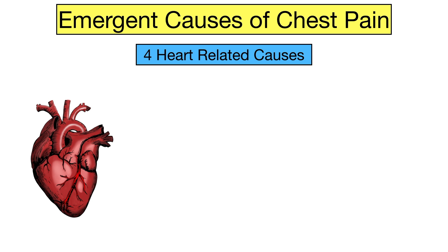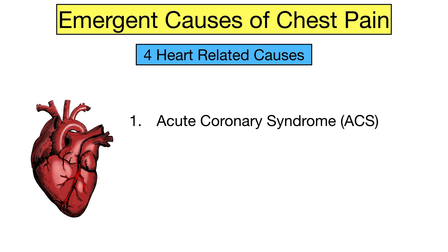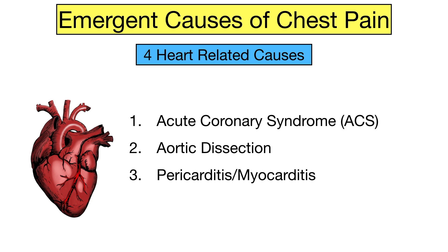Starting with the heart, there are four heart-related emergencies that can cause chest pain. They include acute coronary syndrome or ACS, which includes myocardial infarction and ischemic-related causes. Next is aortic dissection, which is when the inner layer of the aorta tears. Next is pericarditis, which is inflammation of the pericardium or membrane sac around the heart, and myocarditis, which is inflammation of the heart muscle.